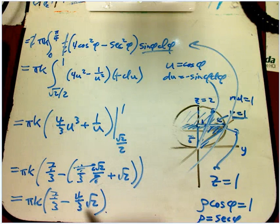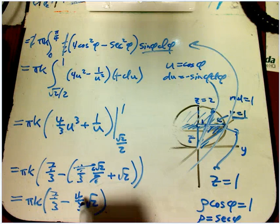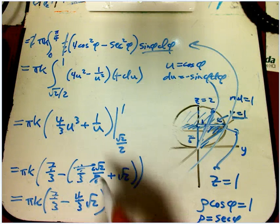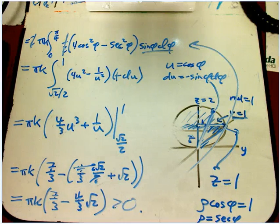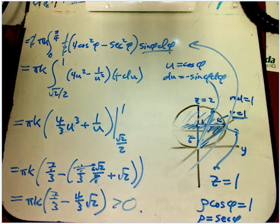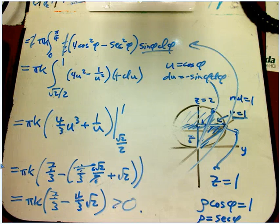We should check that that's actually positive. Well, 4 root 2 is about 5.6, 5.7. That's less than 7. And so this is actually greater than 0, so it makes sense as a mass. So that's an example of using spherical in a sort of moderate case.